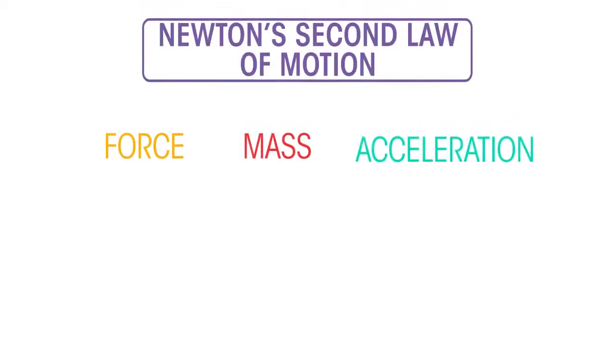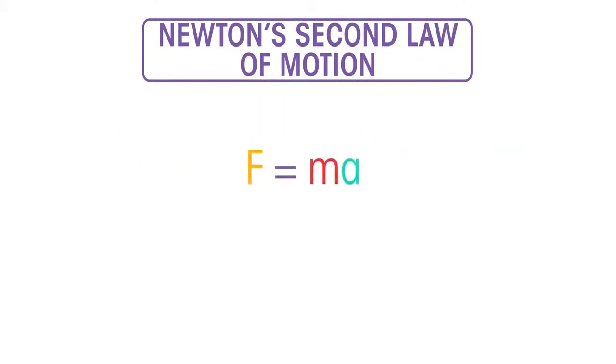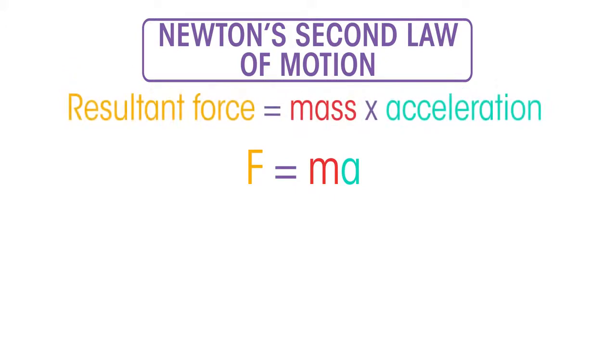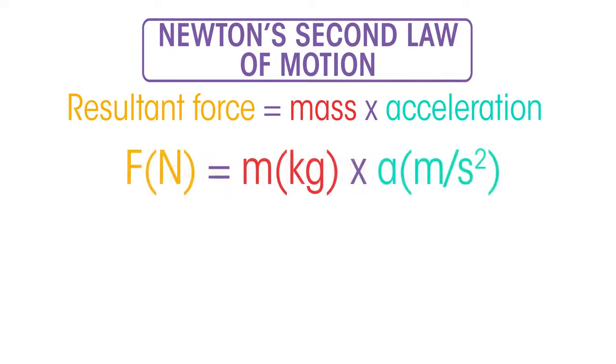The relationship between force, mass, and acceleration is known as Newton's second law of motion. It can be summarized in this equation: Resultant force equals mass times acceleration. When force is measured in newtons, mass is measured in kilograms, and acceleration is measured in meters per second per second.